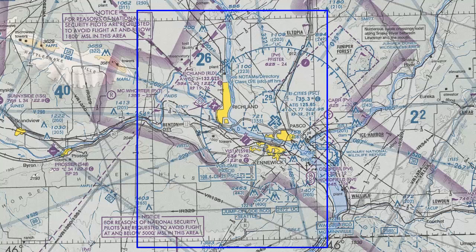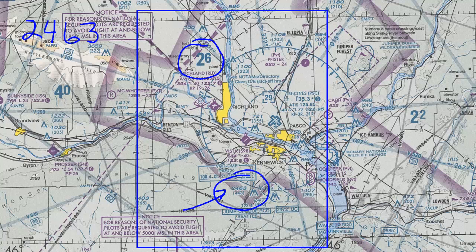First we're going to look at man-made obstacles. In this quadrangle, we can see that the Maximum Elevation Figure is 2,600 feet. The first step is to find the highest obstacle within this quadrant, which happens to be these towers at 2,463 feet. We're going to take 2,463 as our starting point — this is an MSL value, so it's what you'd read right off your altimeter.